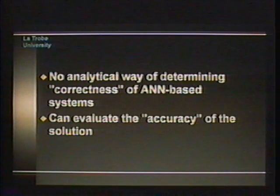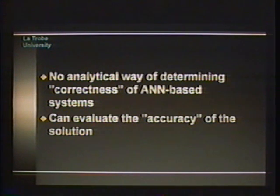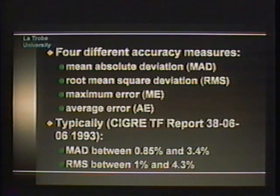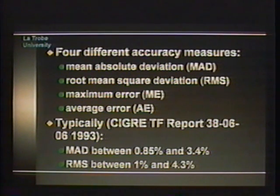We currently have no analytical way of determining how correct the prediction is from an ANN-based system. The only way to evaluate accuracy is by carrying out experiments on a large amount of data. Four accuracy measures are employed: mean absolute deviation, root mean square deviation, maximum error, and average error. Typical values from a SIGRE report indicate mean absolute deviation between 0.85% and 3.4%, and RMS error between 1% and 4.3%.